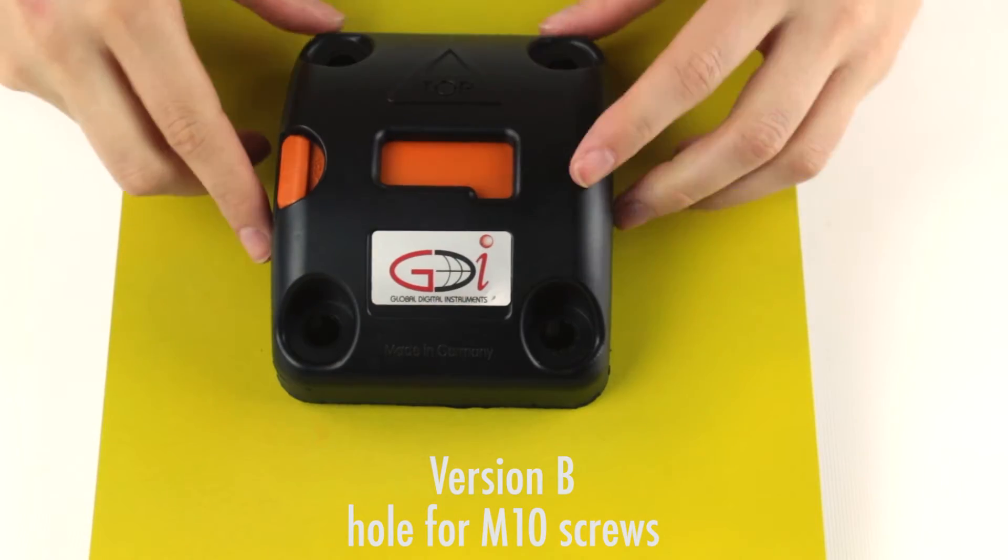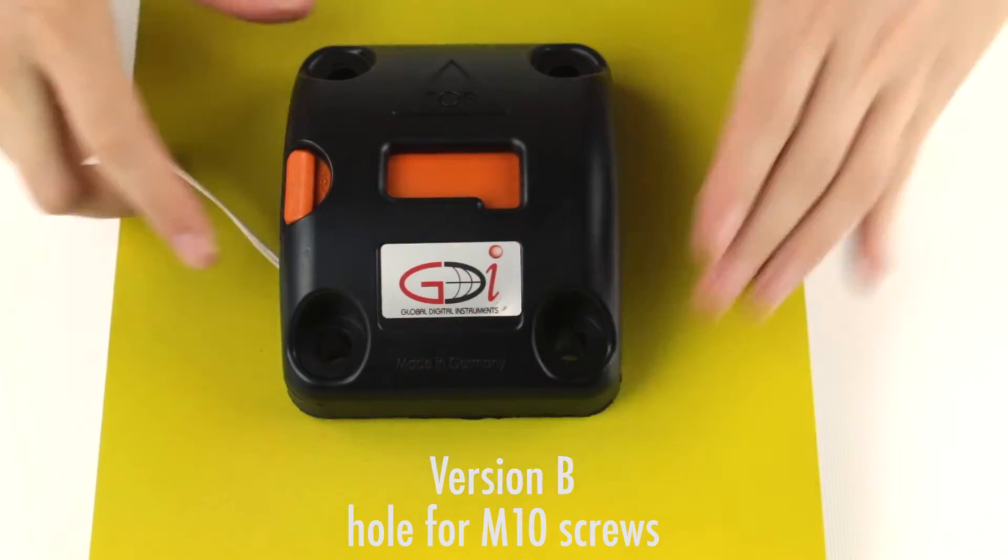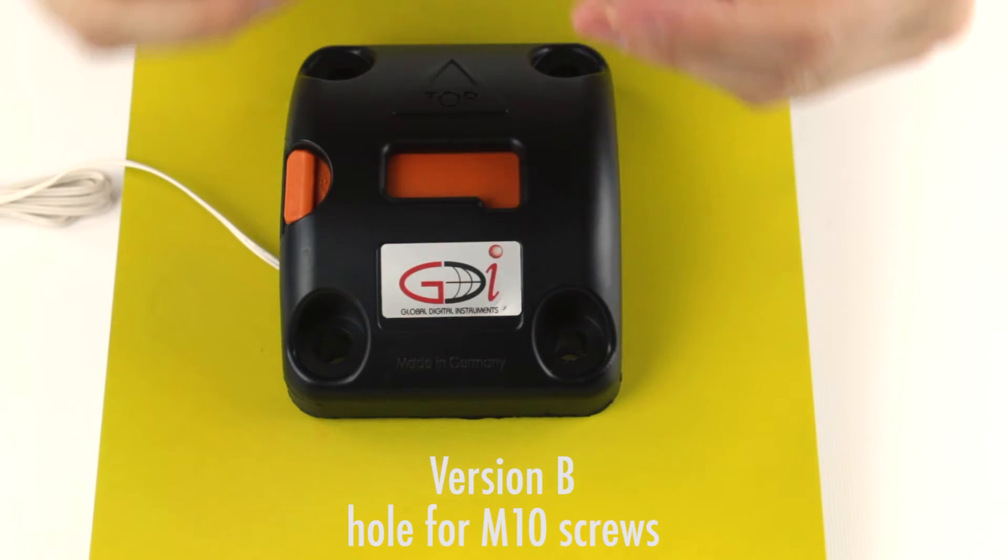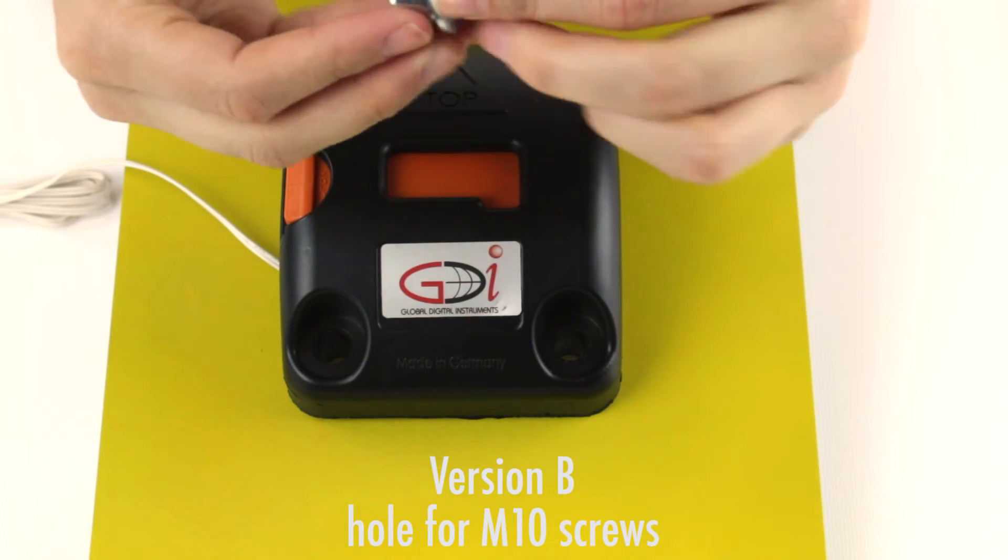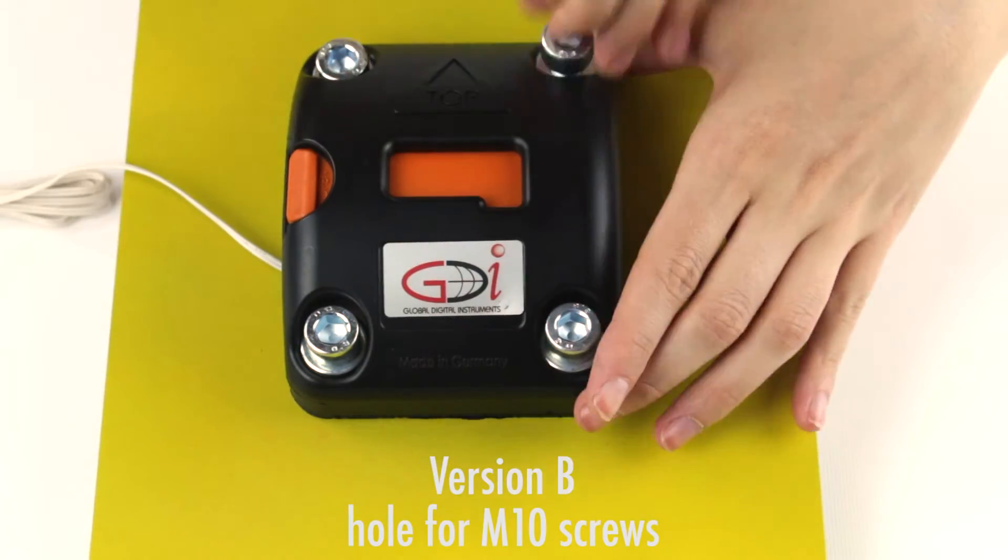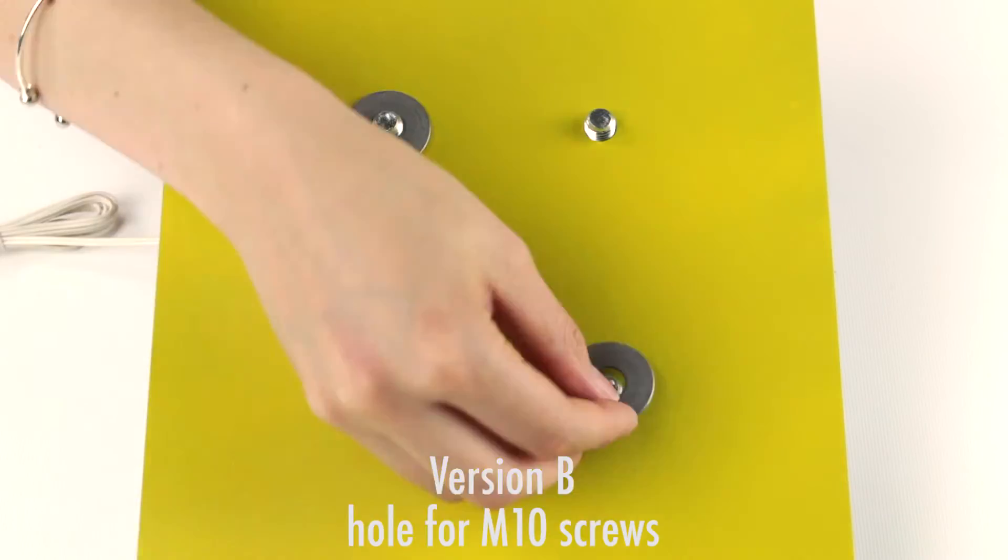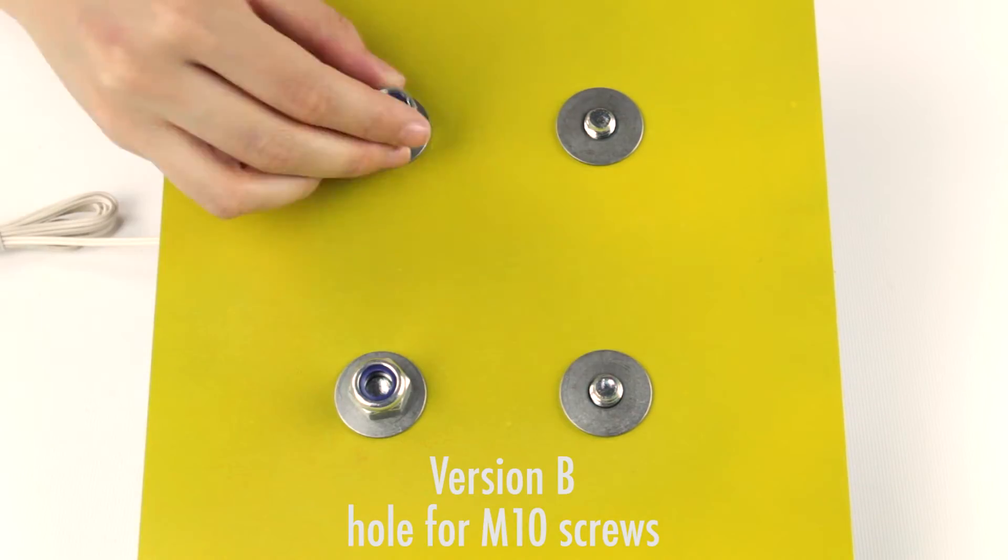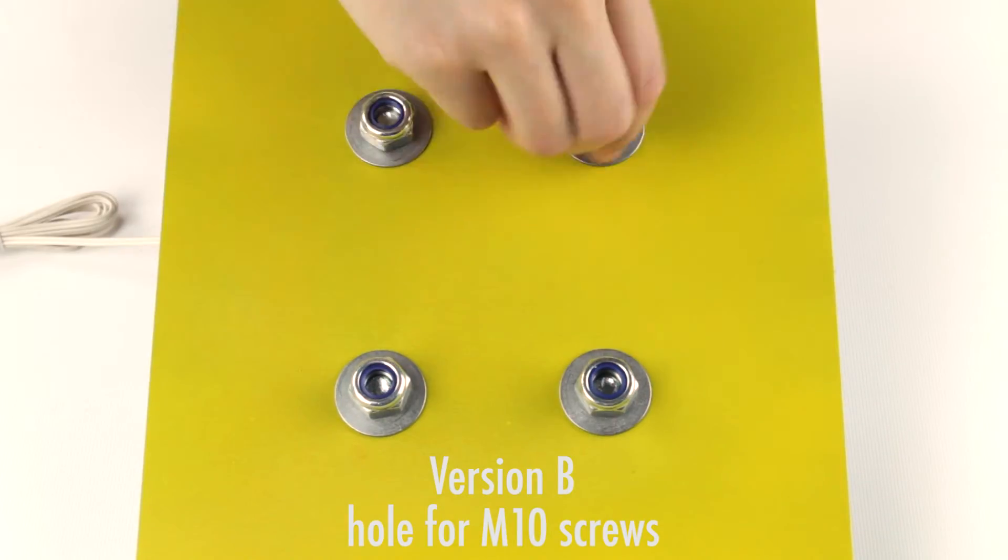Version B: Drill a hole in your attachment for screw size of M10. Add the disc washer to the screws and put them through the housing and the holes. Add the dish washers and the nuts from the back side and pull everything very tight.